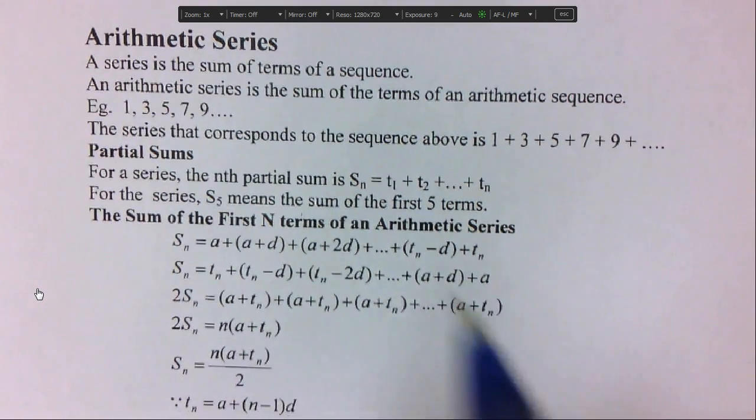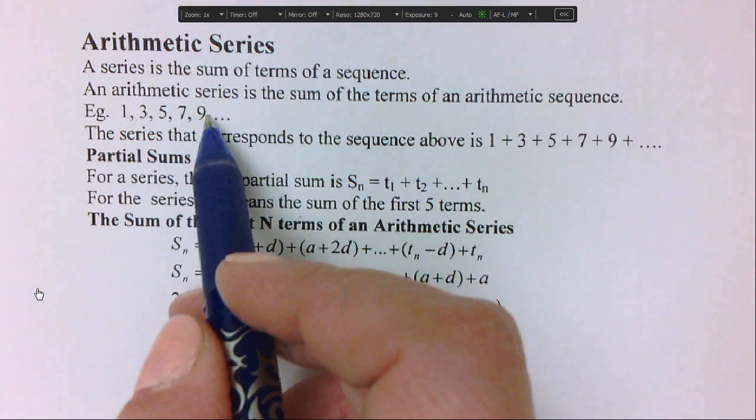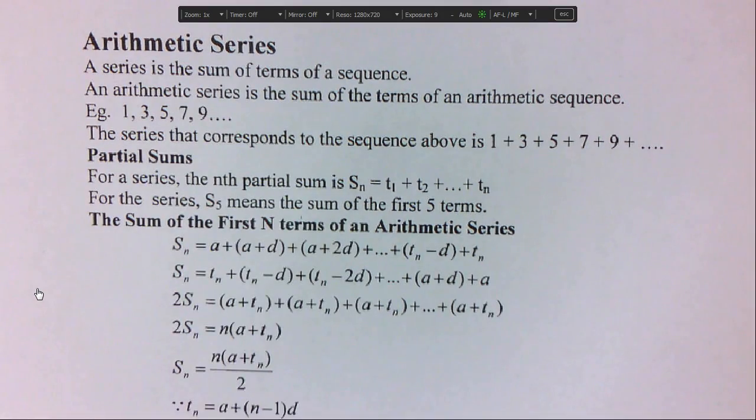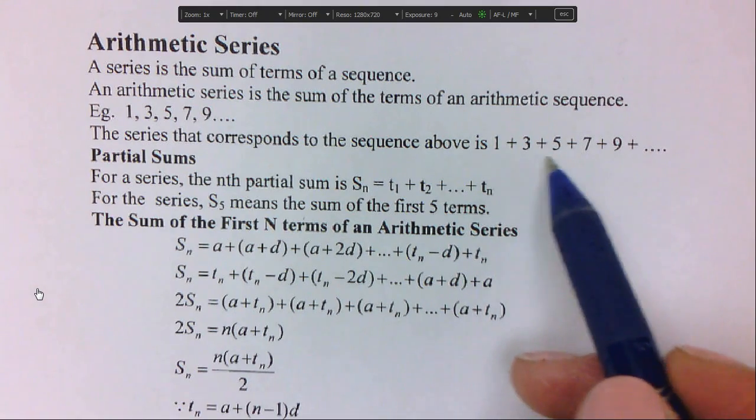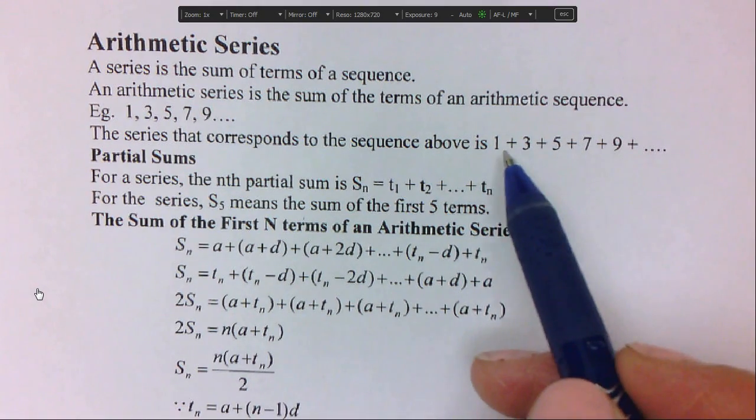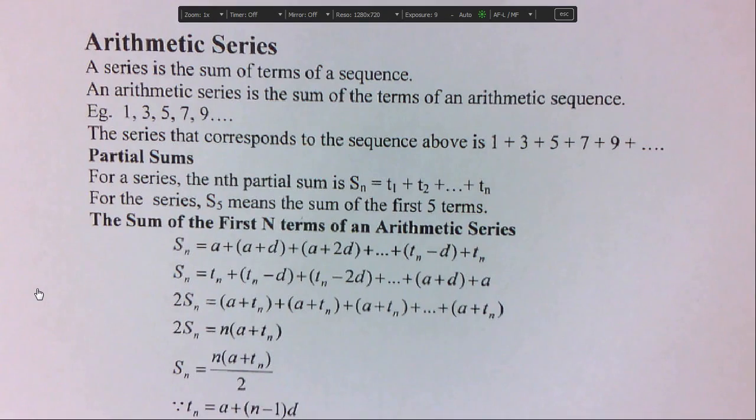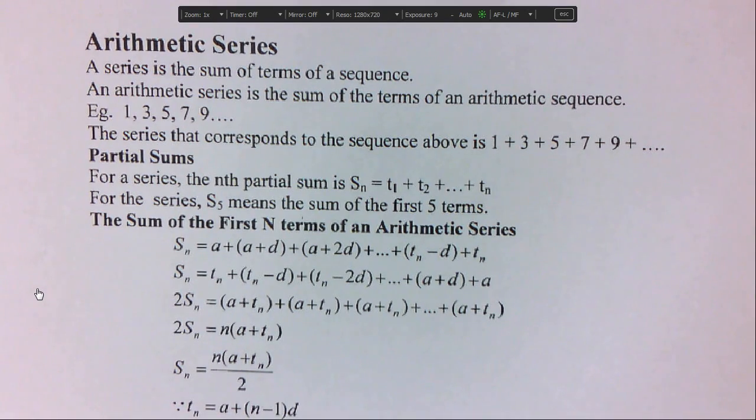So that is an Arithmetic Sequence. It's separated by commas. An Arithmetic Series is the sum of all of these numbers. So instead of separating by commas, you're actually separating by plus signs, and we're going to be adding them all up. That's the difference between series and sequence.